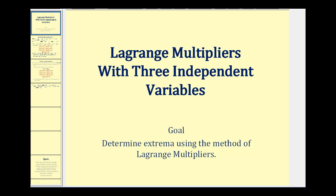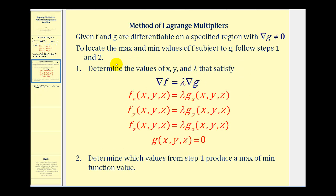Welcome to another example of the Lagrange multipliers, this time with three independent variables. In order to determine the maximum or minimum function values of f under the constraint of g, we're going to set the gradient of f equal to lambda times the gradient of g. That'll give us the first three equations as we see here. Then the fourth equation will be the constraint g equal to zero.